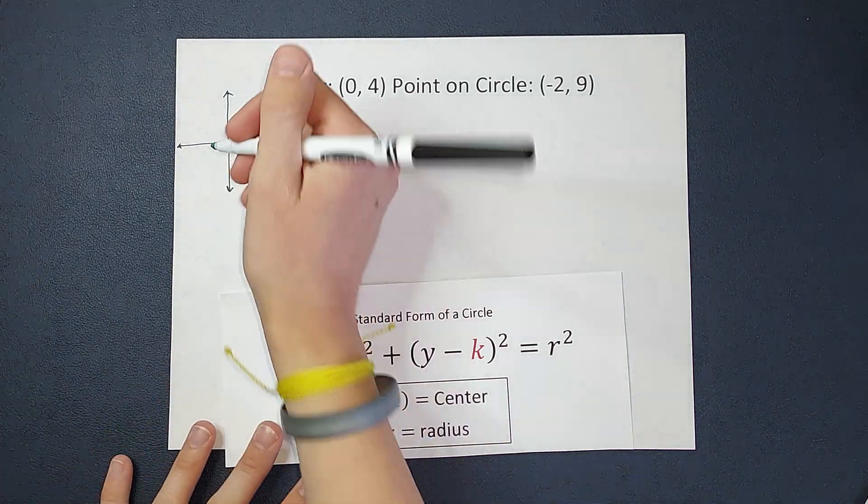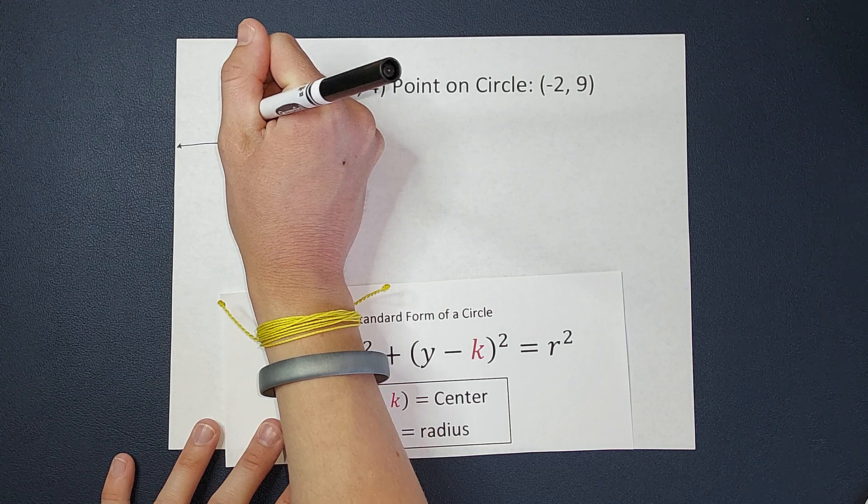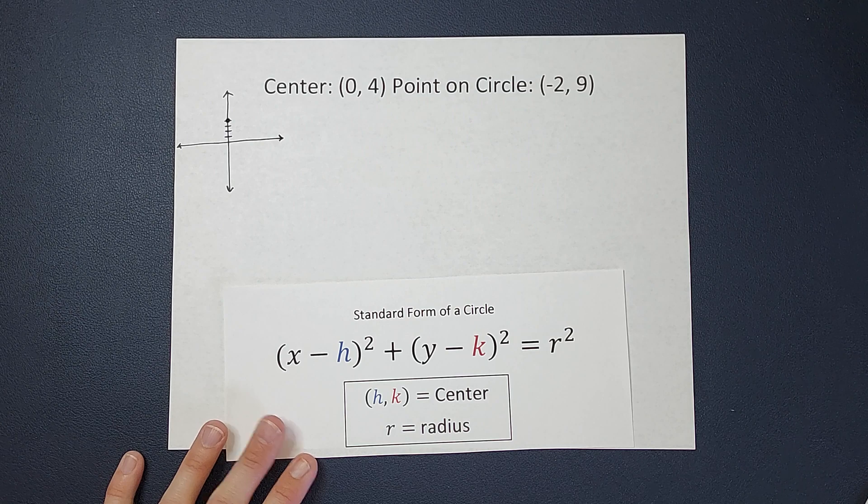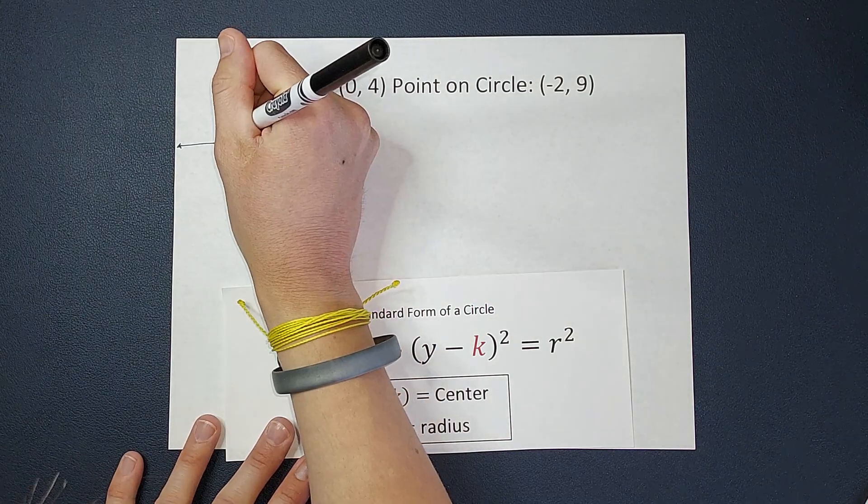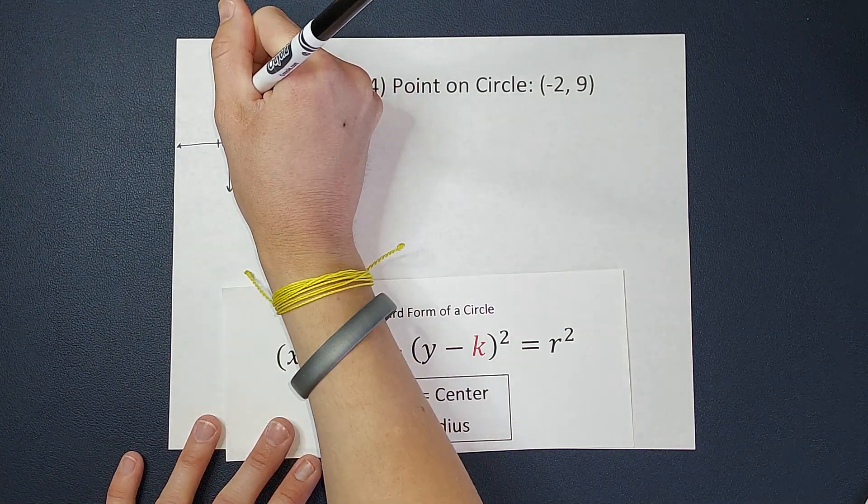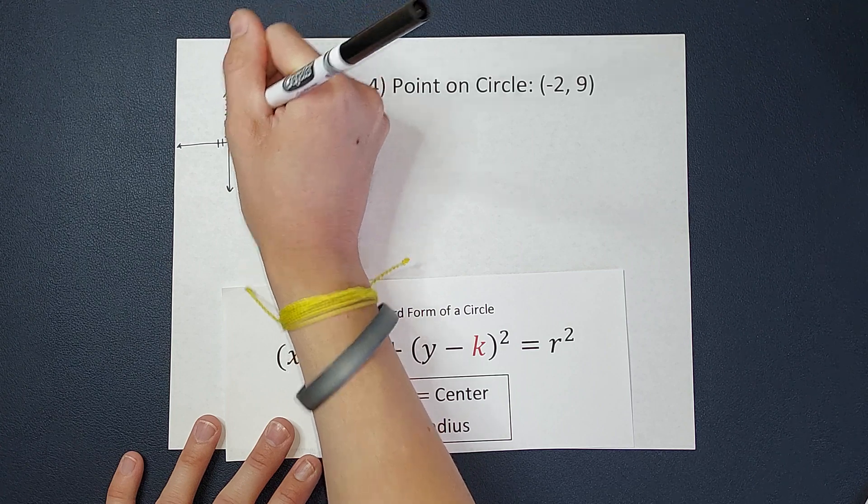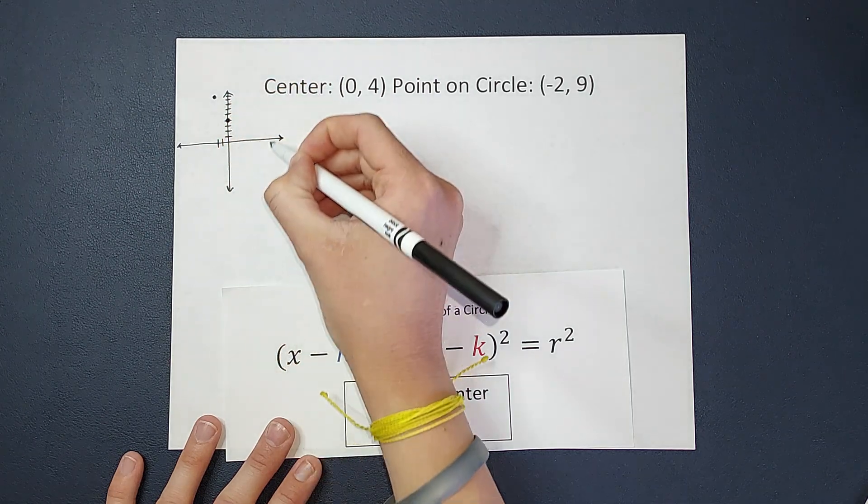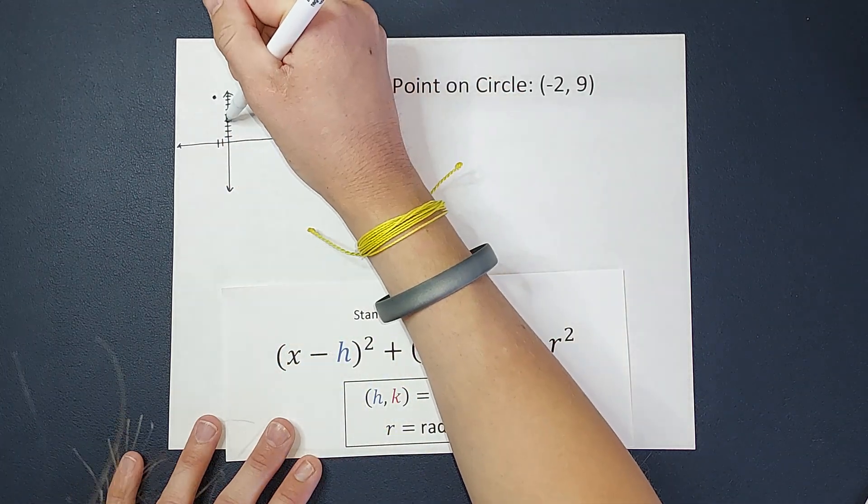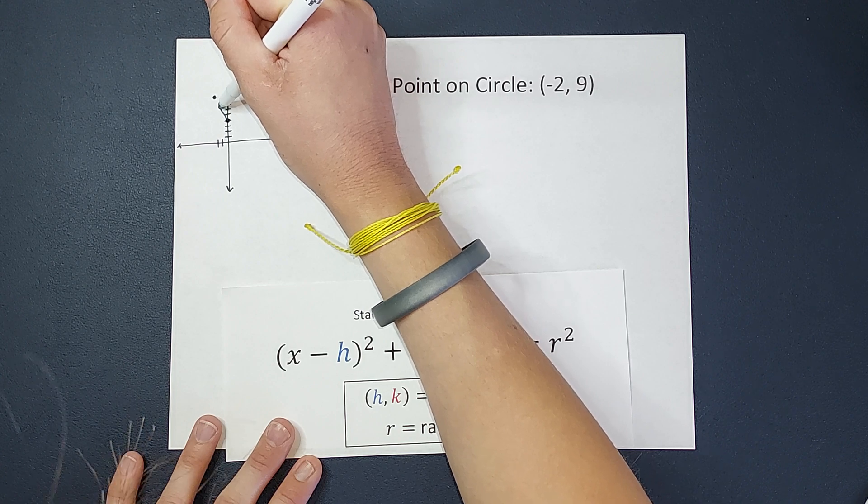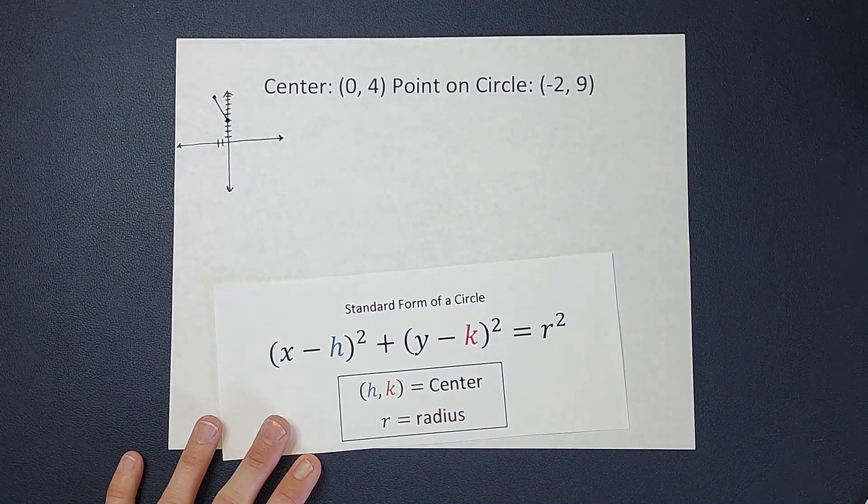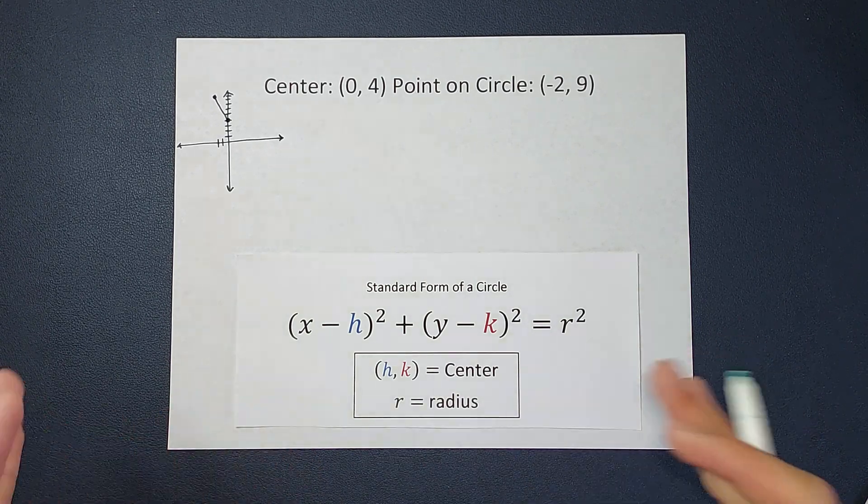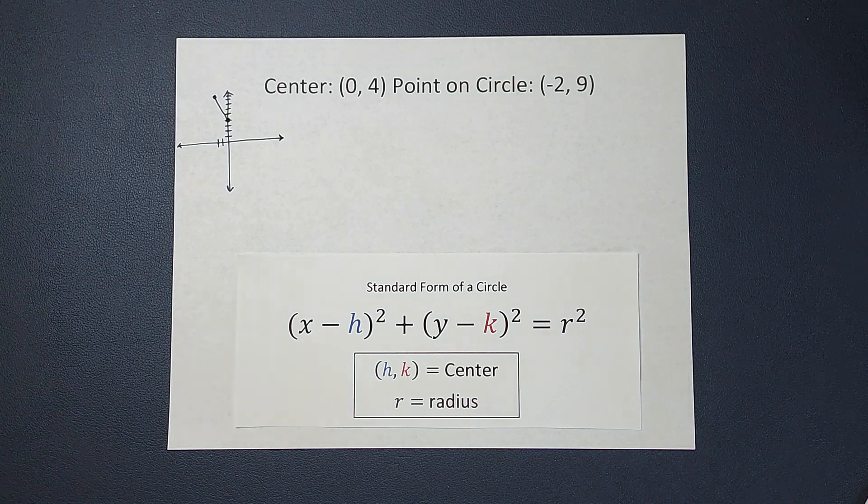So the center of my circle is at (0, 4). So my center is approximately there, and there is a point on my circle at (-2, 9), so about there. So the circle goes around something like that. So if I know from the center to that point, that would be my radius. If I knew that length or that distance. So how do I find the distance between two points? Do you remember?